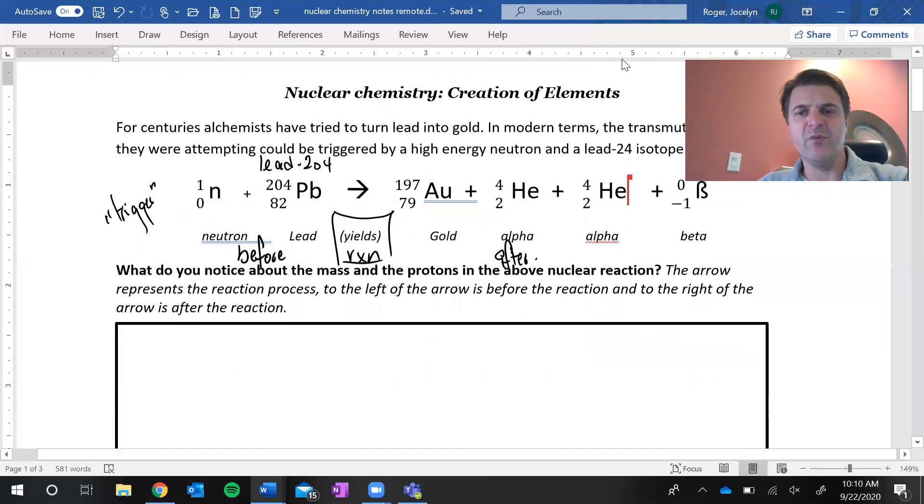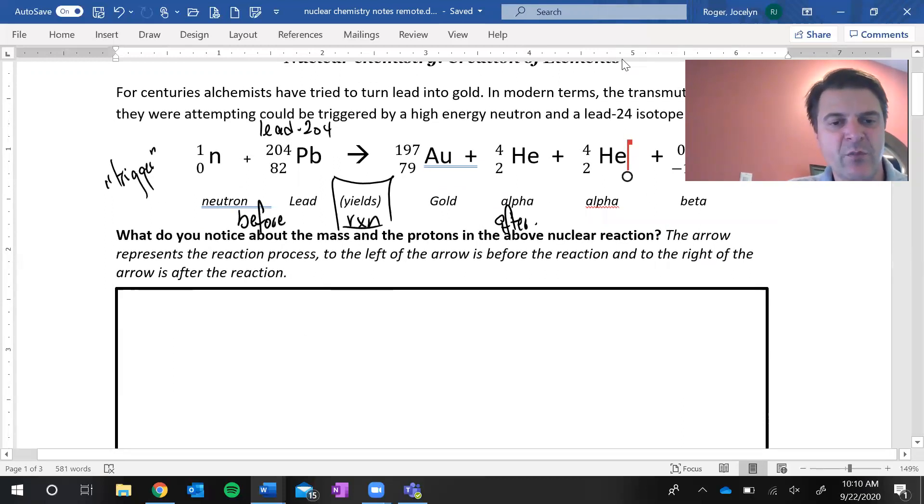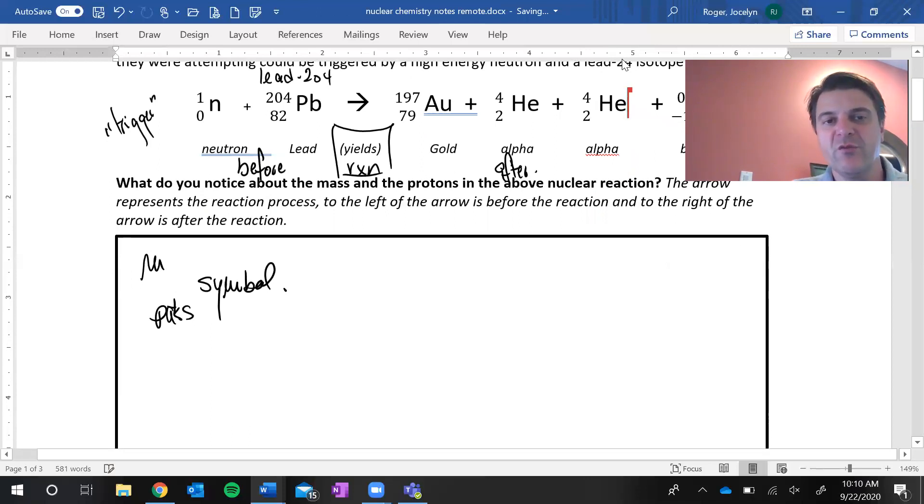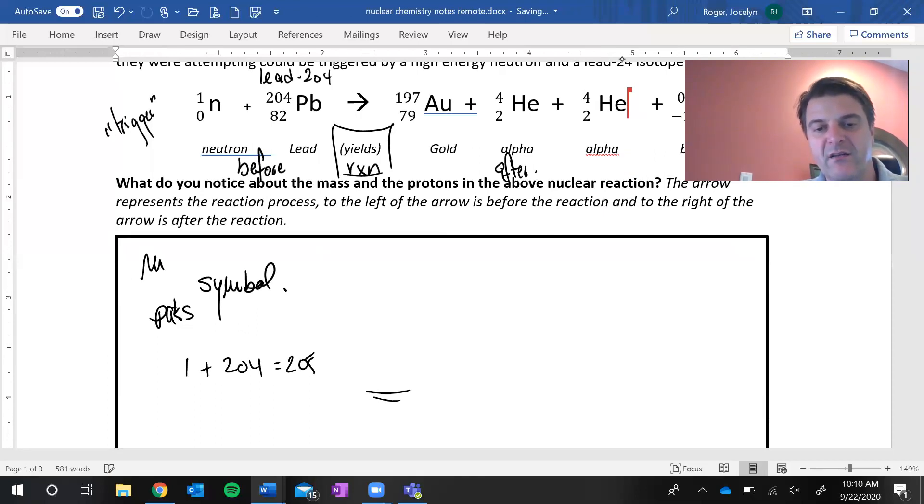What we do notice is when we look at before and after the reaction, we have the symbol, we have the protons or the atomic number, and we have the mass number. We see that before the transformation, before the nuclear reaction, the mass was 1 plus 204, so the total mass before was 205. Then we had the transformation. On the other side, we've got 197, we've got a 4, another 4 and a 0, so 201, 205. The mass number hasn't changed.